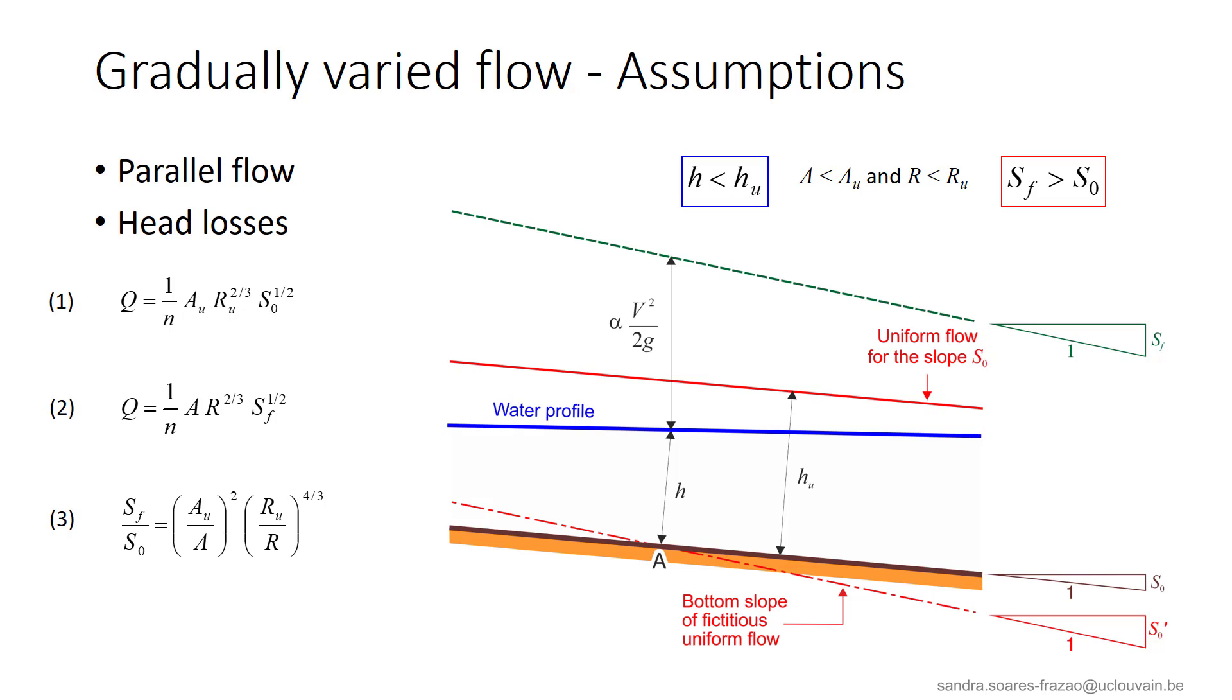In the same way, we can consider the case when H here is smaller than HU. So we have here the uniform flow corresponding to the bed slope S0 and the actual water profile here in blue. From the ratio in equation 3, we can deduce that now SF is larger than S0, which means that the flow will slow down as the braking forces due to friction are larger than the gravity driving forces.